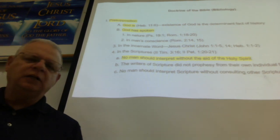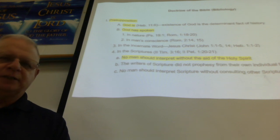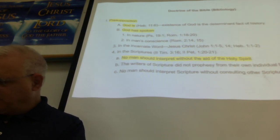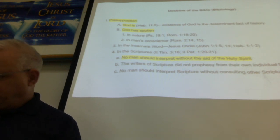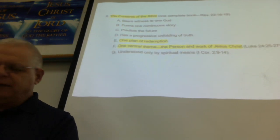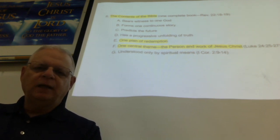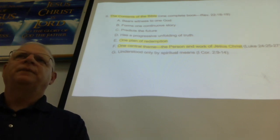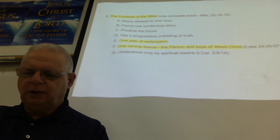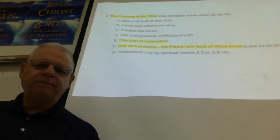Now the contents of the Bible: here we look at the contents of this one complete book. It bears witness to one God. It forms one continuous story. It predicts the future — think about the things still to come that Revelation talks about. There's a progressive unfolding of truth. When Genesis 3:15 tells of Adam and Eve being told there's going to come a Messiah, that truth unfolded over thousands of years about Christ's coming — we look back now a couple thousand years at that one plan of redemption.